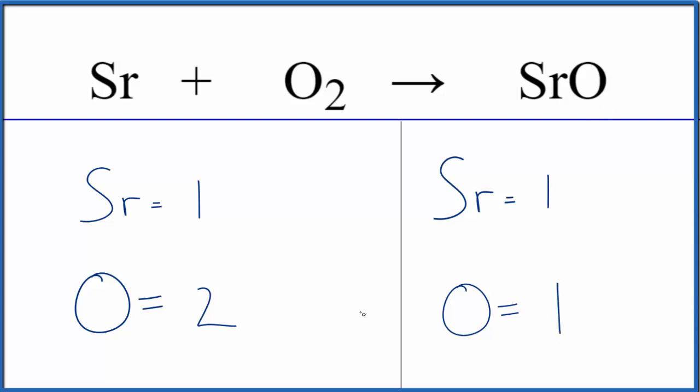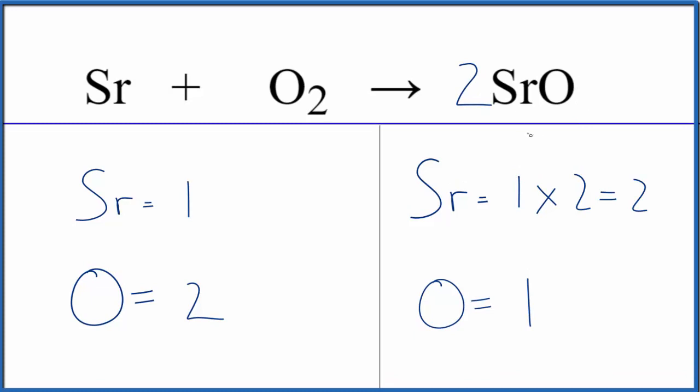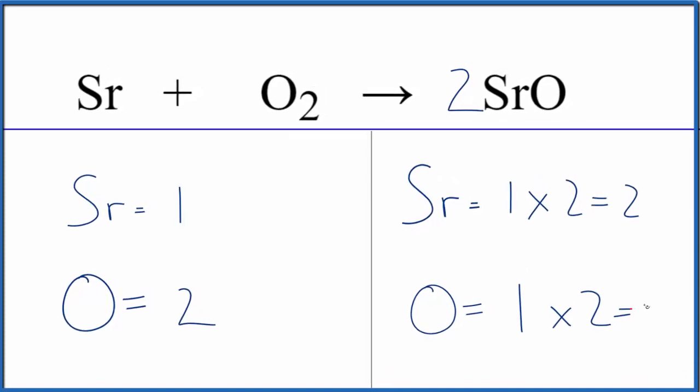Let's start by putting a 2 in front of the strontium oxide. 1 times 2, that'll give us two strontiums, but 1 times 2, that'll balance the oxygen atoms.